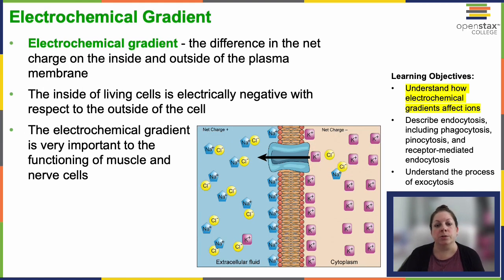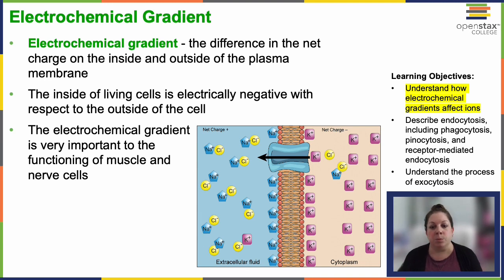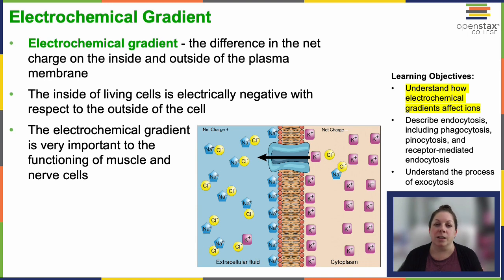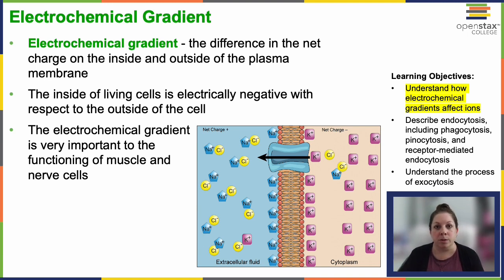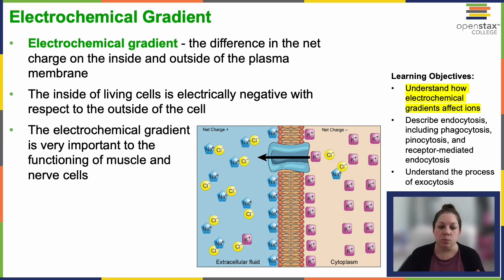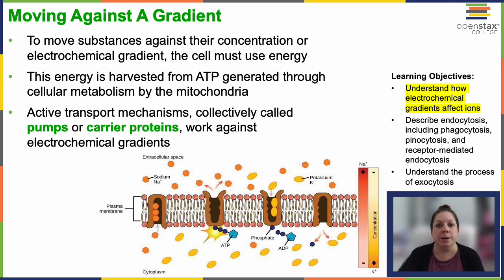Let's first talk about electrochemical gradients. This is when there's a difference in the net charge on the inside versus the outside of the plasma membrane. These are incredibly important to your nervous system cells in particular, but also to your muscle cells. The inside of living cells is electrically a little negative with respect to the outside of the cell. This electrochemical gradient is so important for how we send signals — as it changes across the gradient, you can send signals.